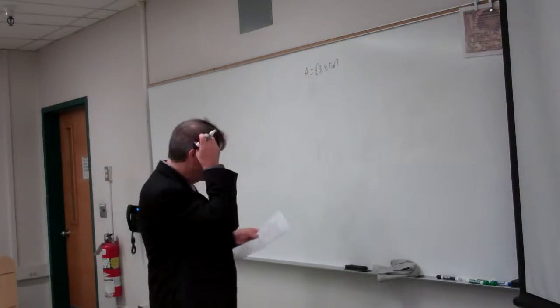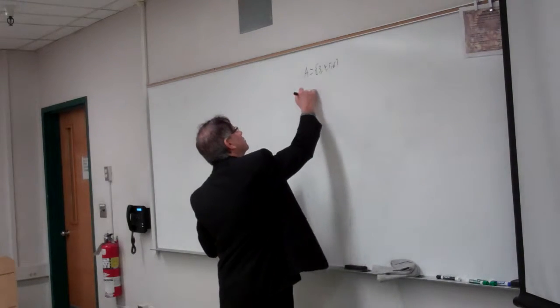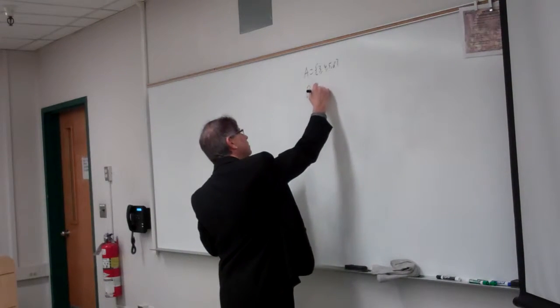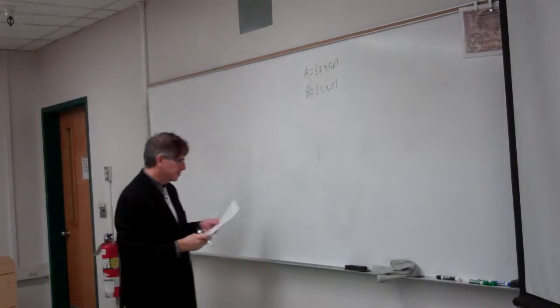All right, so question one was set theory. Two sets A and B. 3, 4, 5, 6, and 1, 3, 5.